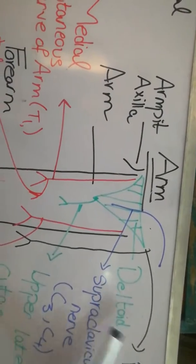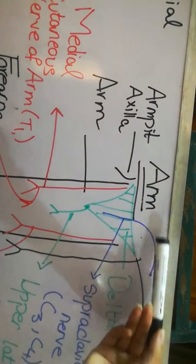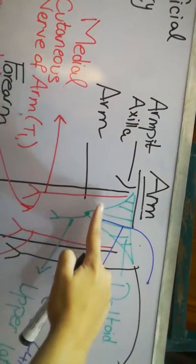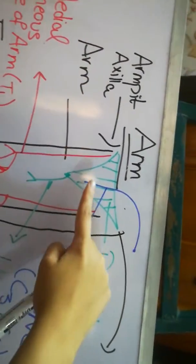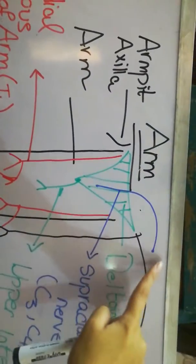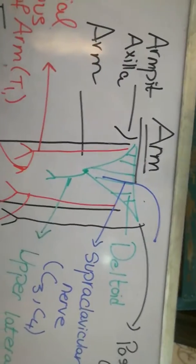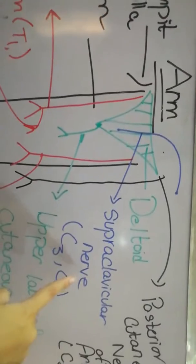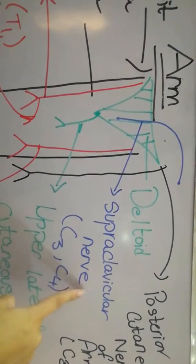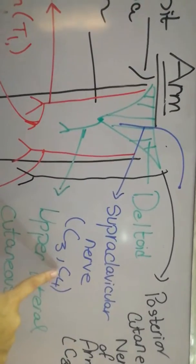Now the first nerve, it will come from the shoulder and it will come and stop at the lower half or at the middle of the deltoid muscle. That nerve which is coming from the shoulder region to the middle half of this deltoid muscle is given the name supraclavicular nerve having the nerve roots C3 and C4.